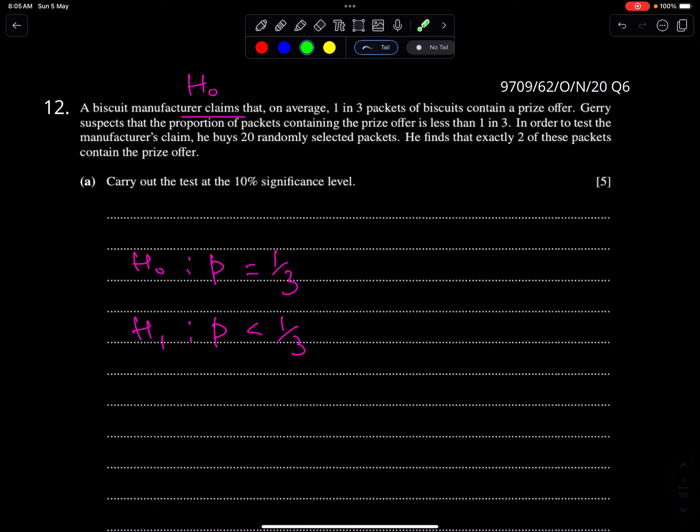Another example from November 20, paper 62, question 6. A biscuit manufacturer claims that on average one in three packets of biscuits contain a prize offer. The P of binomial is 1/3 because there are two outcomes. Jerry suspects that the proportion of packets containing the prize offer is less than 1/3. In order to test the manufacturer's claim, this is H0, and this is H1. This is the claim.